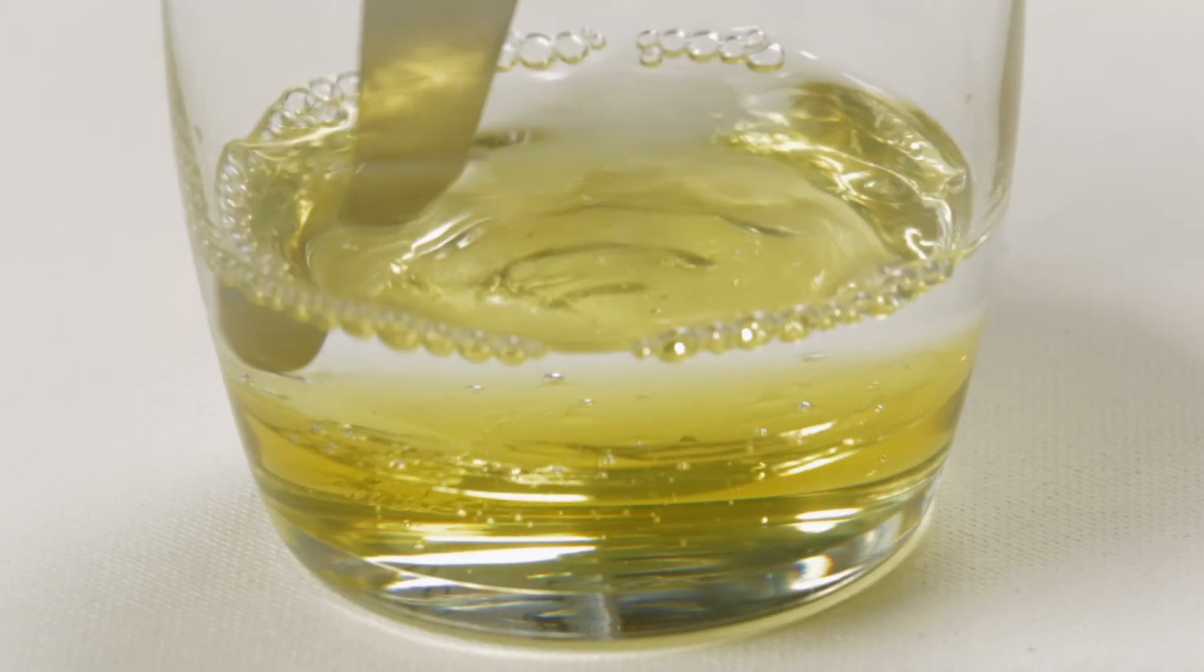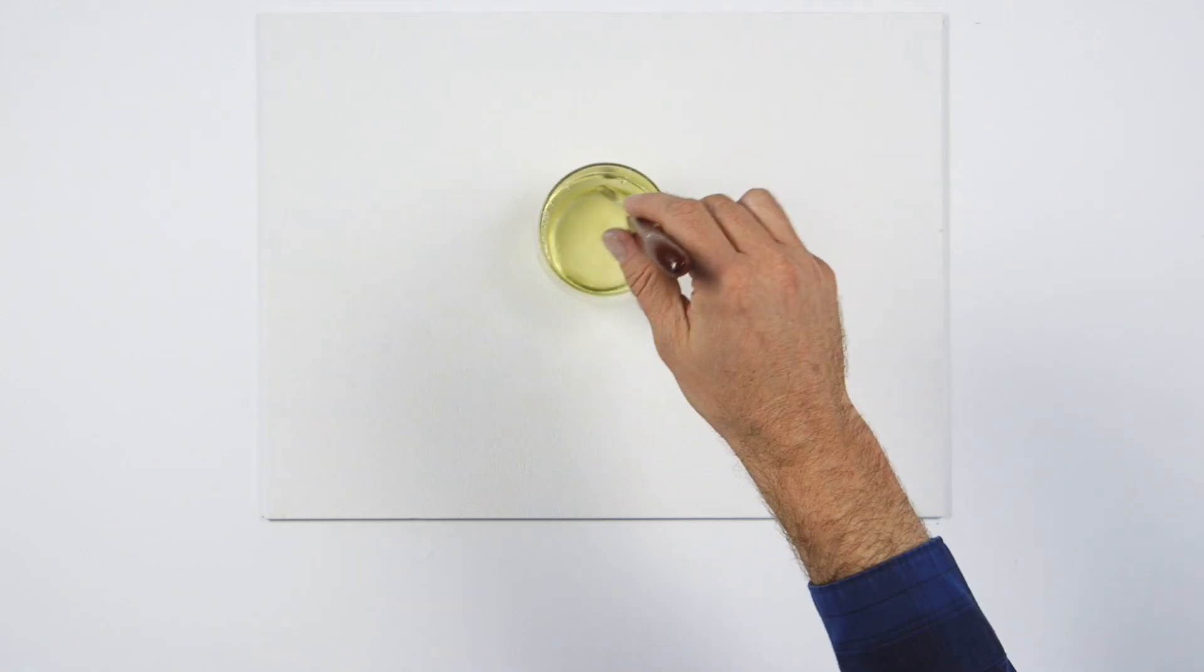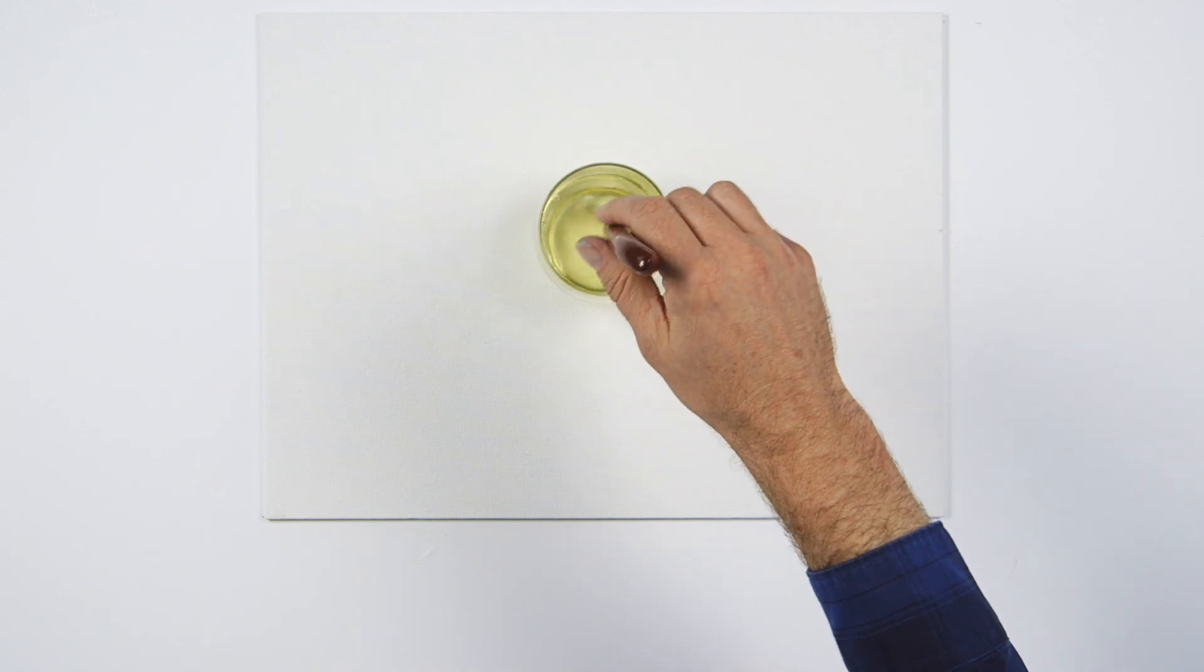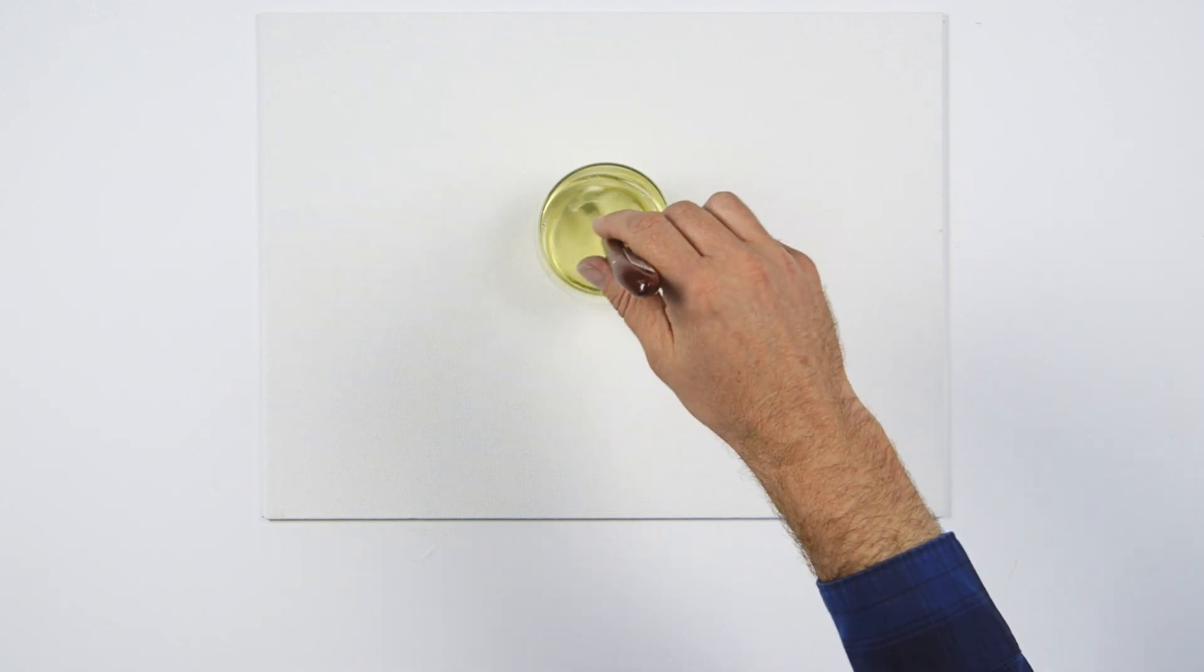In Leonardo's time, the melting of figures into the background was achieved by the layering and fusing of transparent colors over a modeled underpainting to give the appearance of disappearing rounded edges.